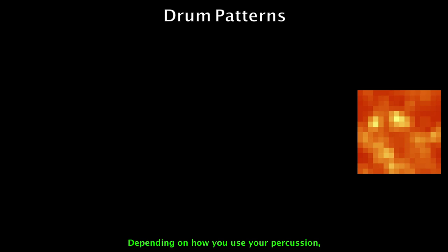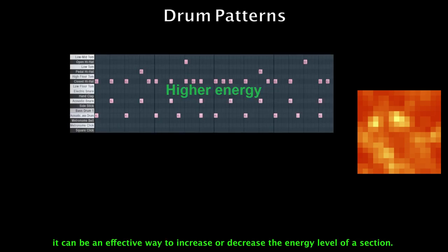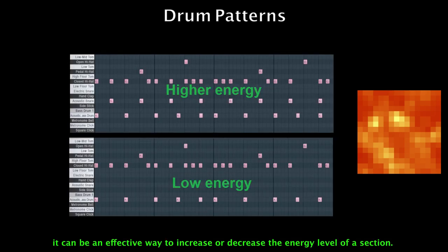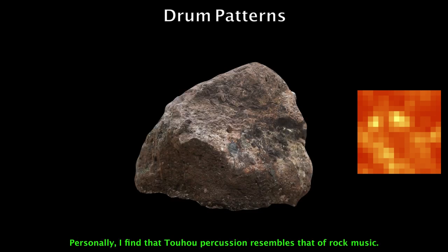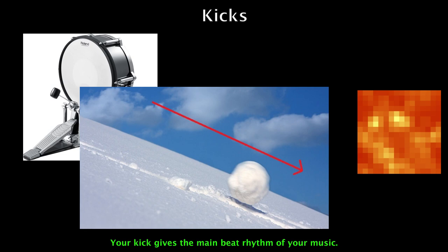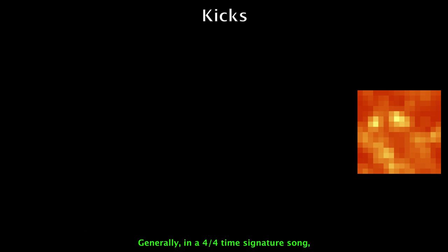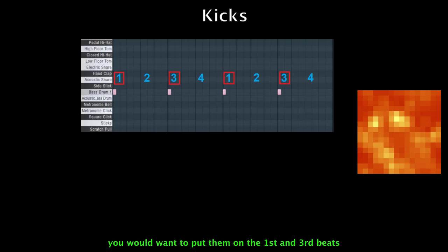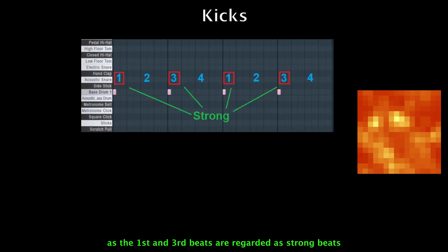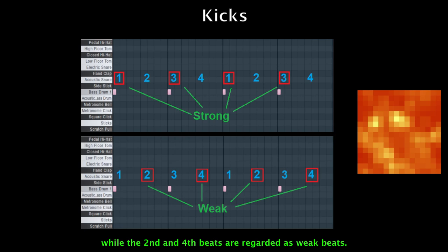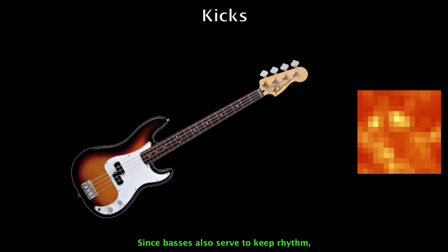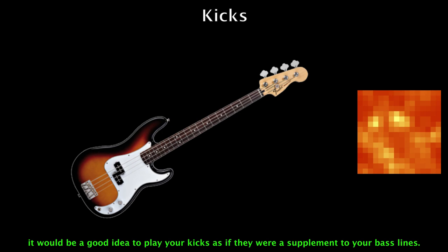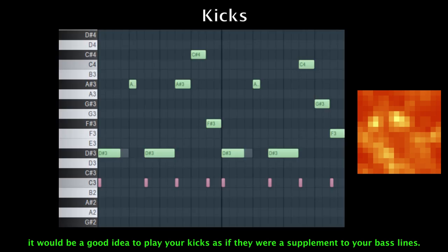Depending on how you use the percussion, it can be an effective way to increase or decrease the energy level of a section. Personally, I find that Toho percussion resembles that of rock music. Your kick gives the main beat rhythm of your music. Generally, in a 4/4 time signature song, you would want to put them on the first and third beats, as those are the strong beats, while the second and fourth beats are regarded as weak beats. Since bass also serves to keep rhythm, it would be a good idea to play your kicks as a supplement to your bass lines.